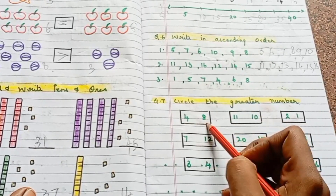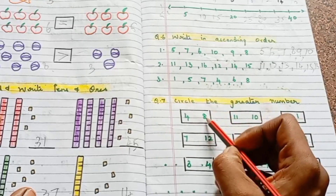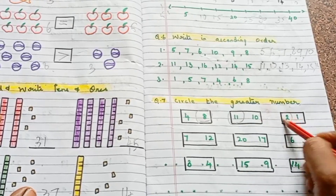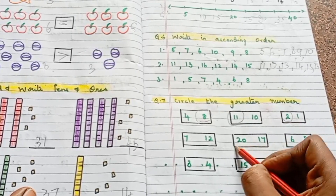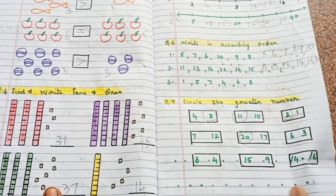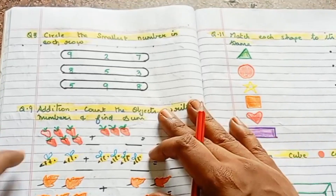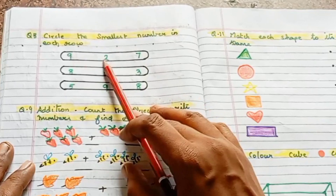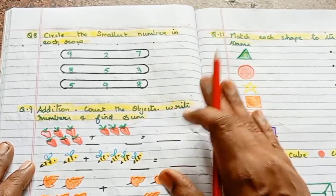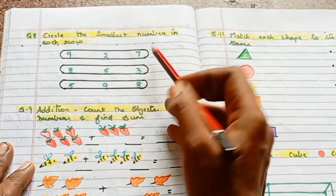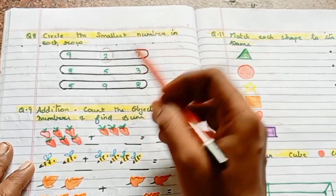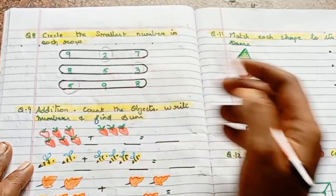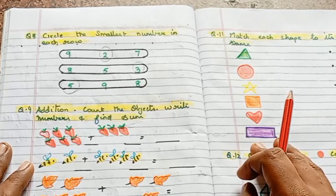Circle the greater number. 4 and 8 — bigger number is 8, so circle 8. 10 and 11 — 11 is the greater number. 17 and 20 — 20 is greater. For smallest number: from 9, 2, 7 — least is 2. From 8, 5, 3 — least is 3. From 5, 9, 8 — least is 5. Circle the smallest number.